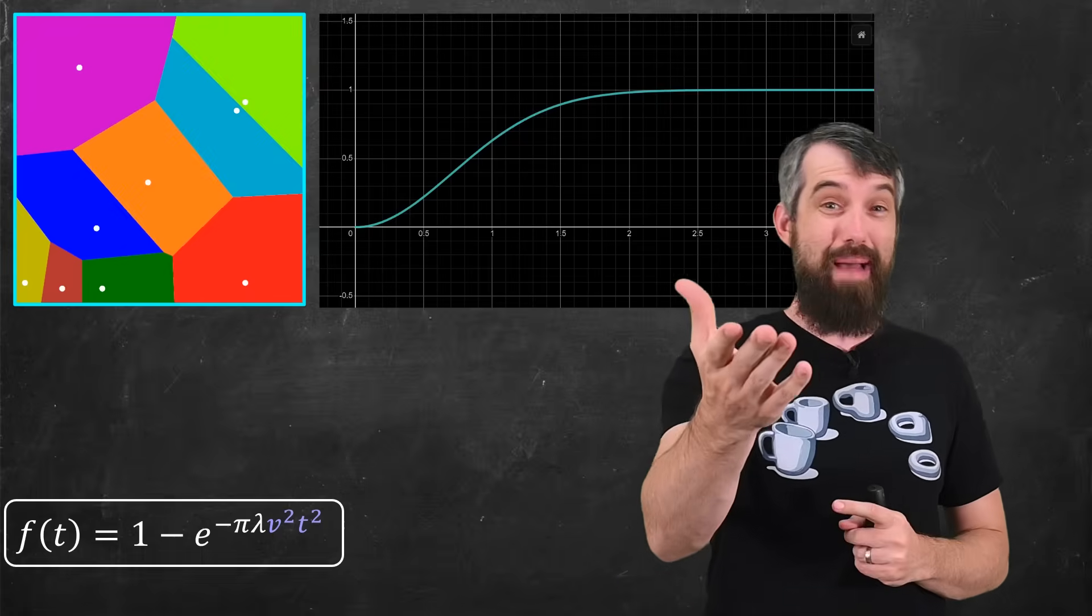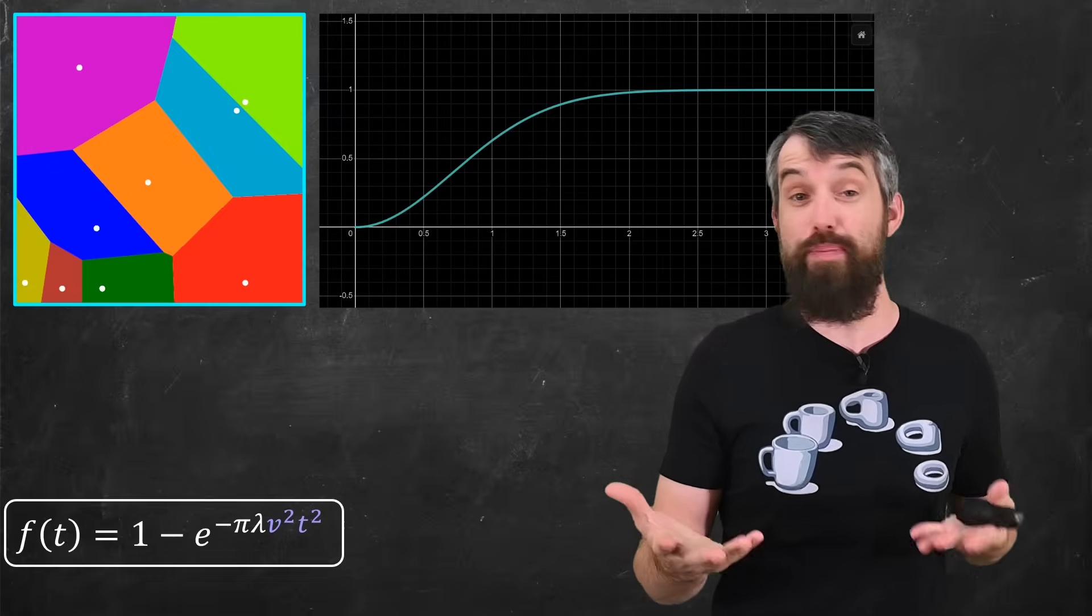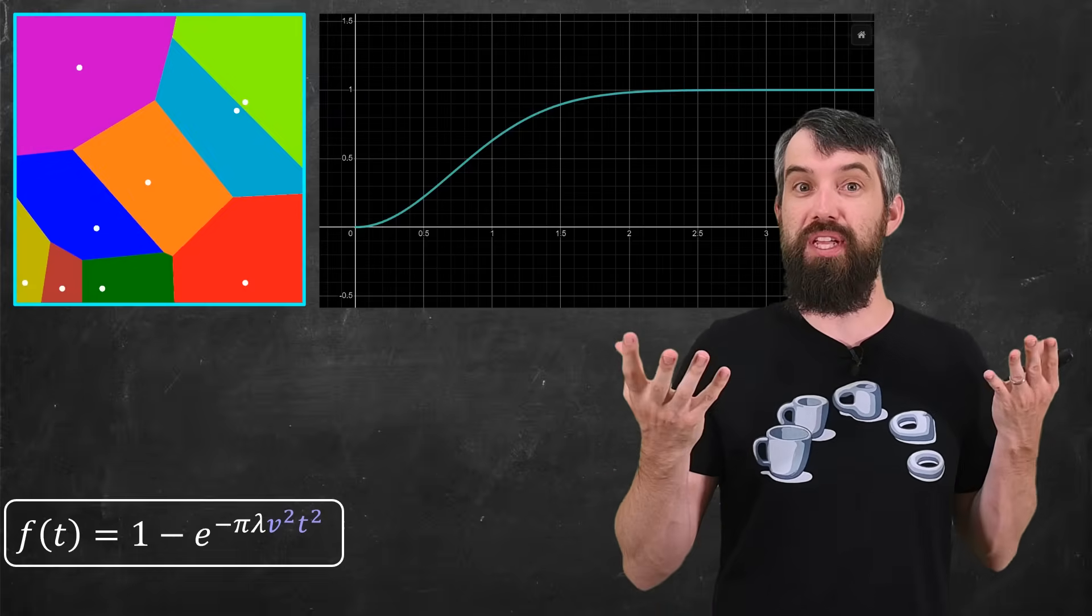And indeed the graph of this function sort of matches kind of the behavior we're expecting, which is some evidence that the mathematical model we came up with is relatively reasonable.